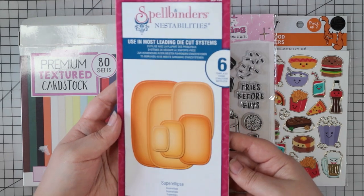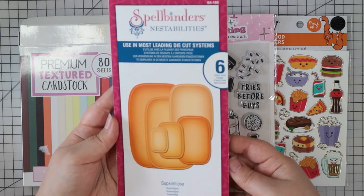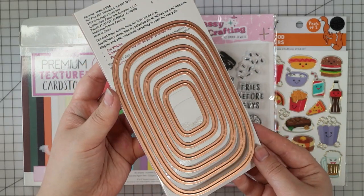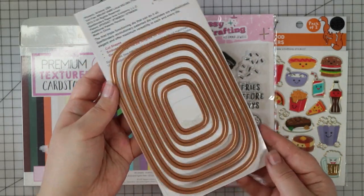For a die set I've pulled out this Spellbinders Nestability set which is an unusual shape. I've not used this one before on any cards, so I thought it'd be fun to play with and see what kind of looks I can get with it.